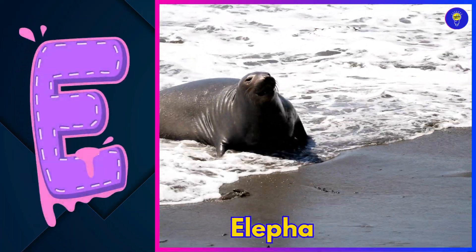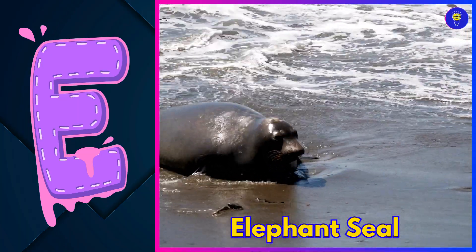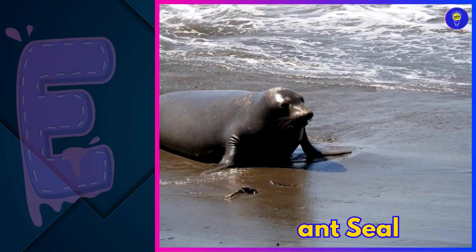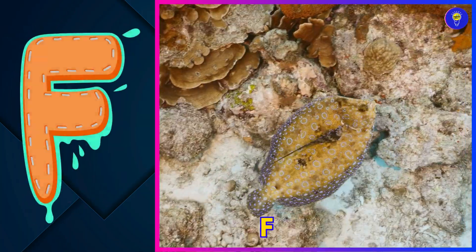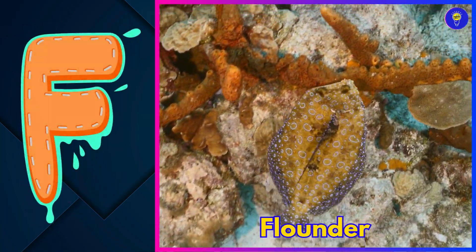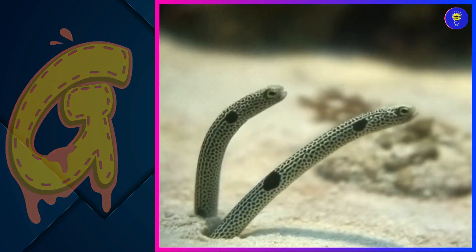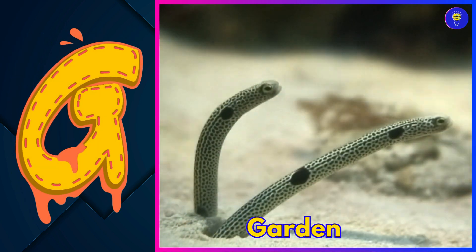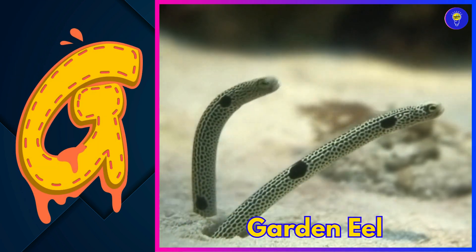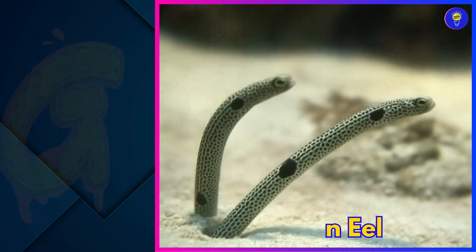E is for elephant seal. Eh, eh, elephant seal. F is for flounder. Fuh, fuh, flounder. G is for garden eel. Guh, guh, garden eel.